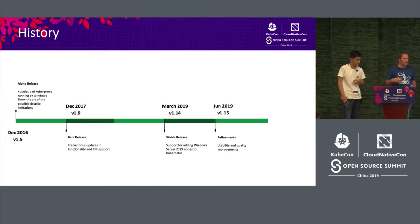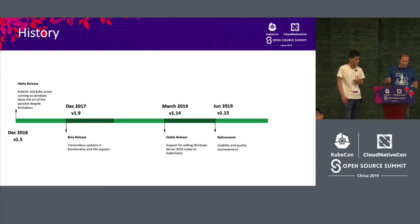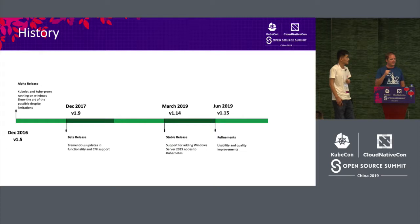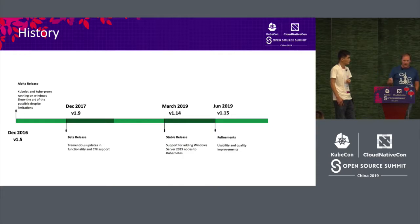Very quickly, we worked in the community to produce an alpha release towards the end of 2016 in Kubernetes 1.5. We worked to solve networking problems and support CNI. The initial release had kubelet and kube-proxy running on Windows — that's the key anchor to make worker nodes in your Kubernetes cluster run Windows, while the master components still run on Linux nodes. In 1.9, many improvements were made, fundamentally adding CNI support to the kubelet and kube-proxy.